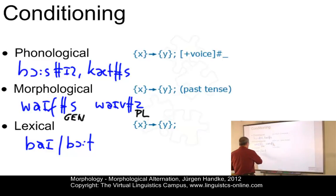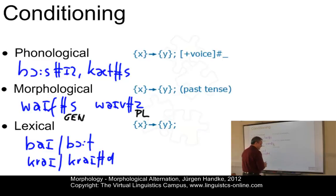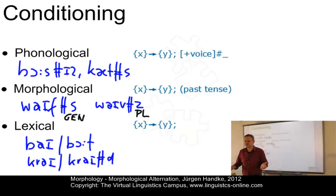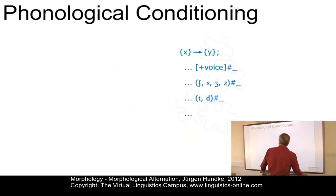If we contrast 'buy/bought' with 'cry', the past tense is of course 'cried', and not 'crought' as we might have assumed. So here we have lexical conditioning where the choice depends on a particular lexeme. Let's now look at these cases in more detail.